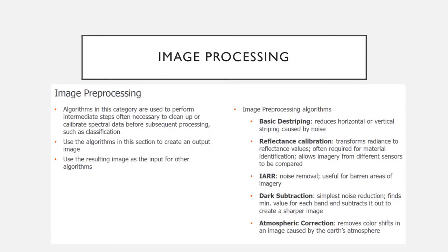Now, image preprocessing. This is something you will either do a lot of or none of. Typically we look for finished products from USGS or similar repositories — tier-one products that have already been pre-processed to remove many of the issues. But it's not impossible to learn to do it yourself. When we talk about image preprocessing we're really talking about algorithms used to perform intermediate steps — often necessary to clean up and calibrate spectral data before doing things like classifications.